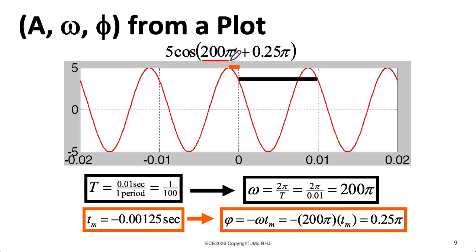So that gives me my omega and my phi. And the easiest thing to find is the amplitude A, which I can just read off the graph here as 5.